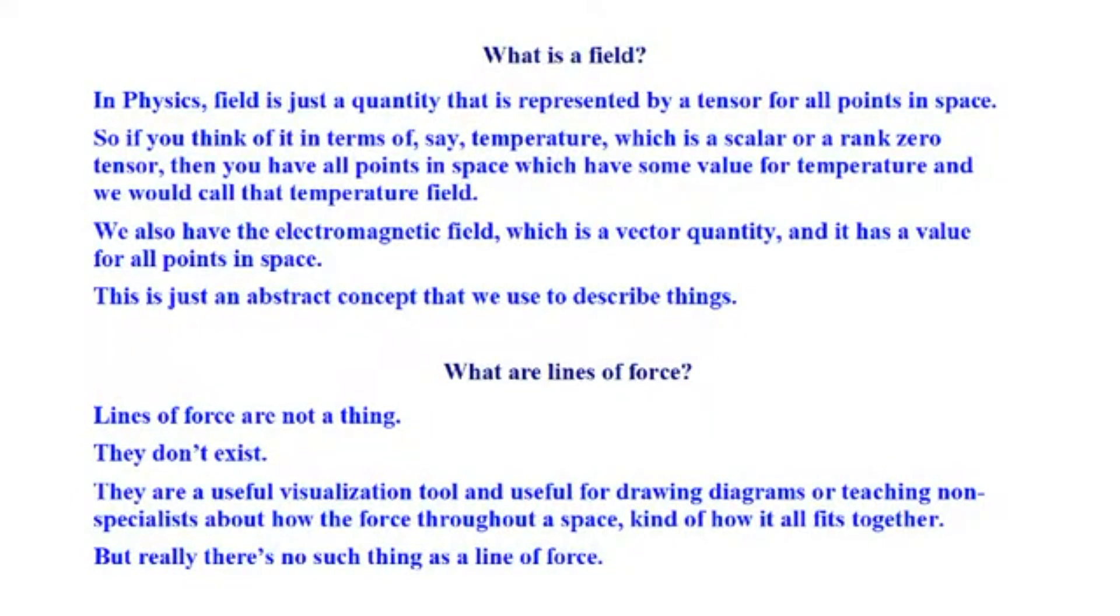He says, in physics, field is just a quantity. Quantity, what is a quantity? It's a number that is represented by a tensor for all points in space. What is he saying? He's saying there's a region, and it's got a whole bunch of numbers which represent some value, could be temperature, could be gravity, could be magnetism, strengths of certain parameter. That's all it is.